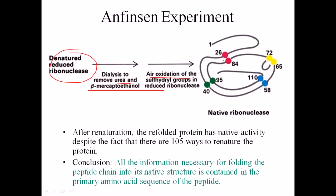They obtained native ribonuclease that was fully functional, like the original. So what he did was: take ribonuclease, disrupt its structure by denaturing it, then remove the causative agents that denatured it, and that eventually returned the ribonuclease to an active conformation.